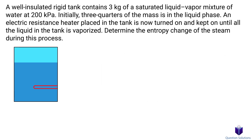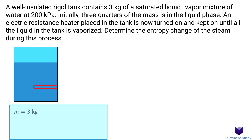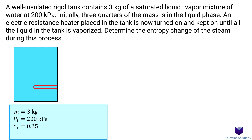Let's take a look at this problem, where we have a tank that contains a liquid vapor mixture. There is a heater inside that vaporizes all the water. We need to figure out the entropy change of the steam during the process. The tank contains 3 kg of a saturated liquid vapor mixture at 200 kPa. At the beginning, three quarters of the mass is in liquid phase, meaning a quarter is vapor — so x₁ = 0.25. Everything turns to vapor at the end, so x₂ = 1.